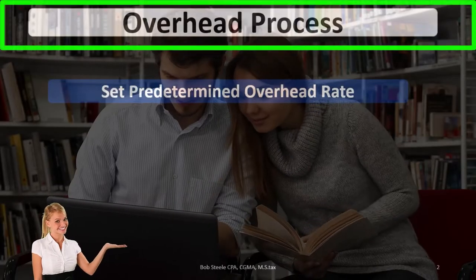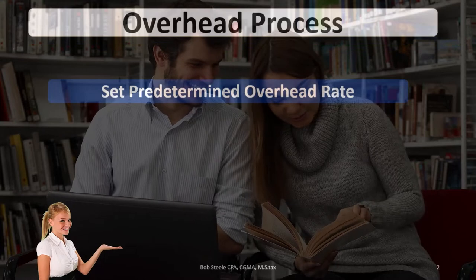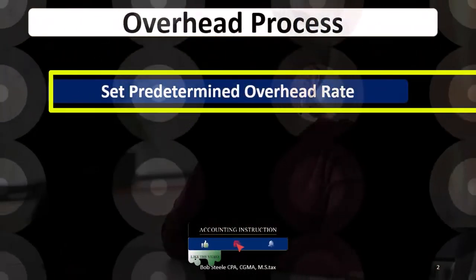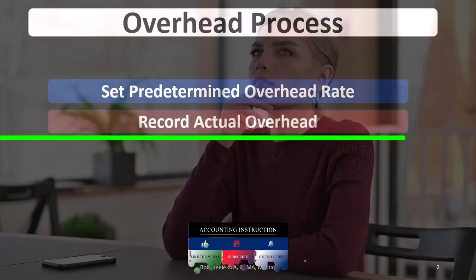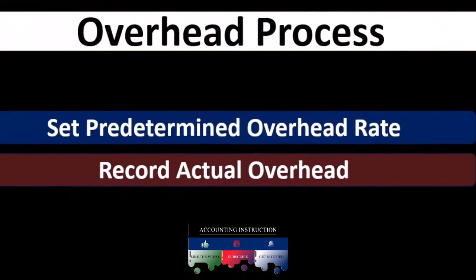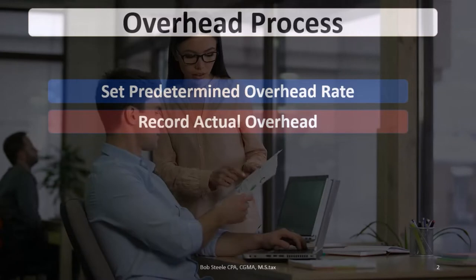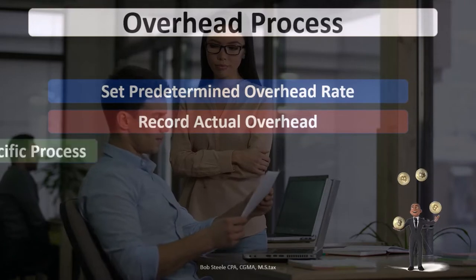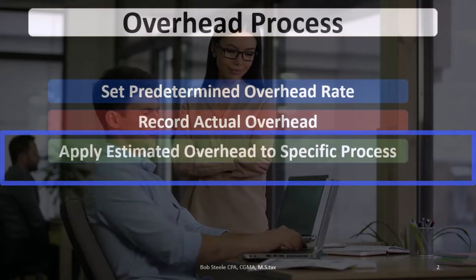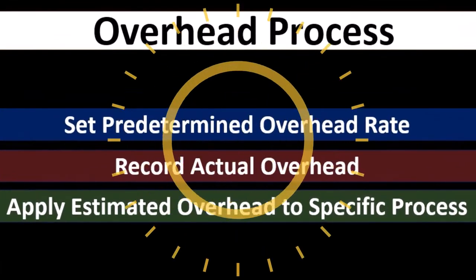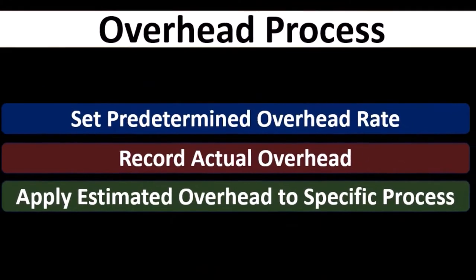Through the processing and recording of overhead, first we typically set up the predetermined overhead rate based on last year's information. We then record actual overhead — we know what the actual overhead is. The actual overhead doesn't go into work in process but to the departments. We then apply estimated overhead to specific processes; this is only an estimate.